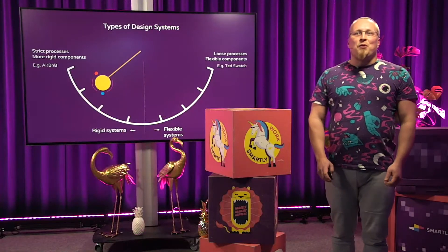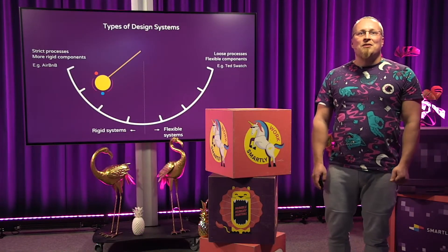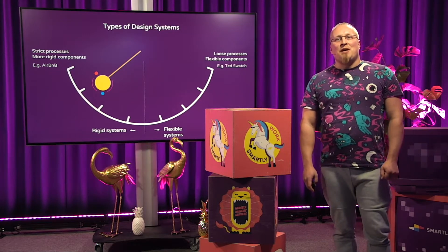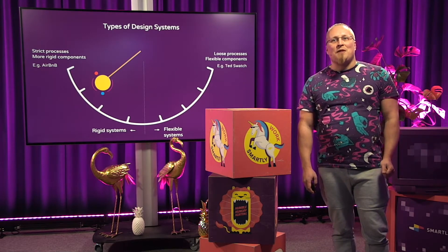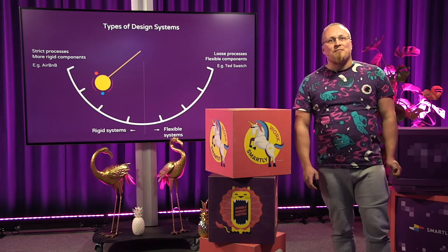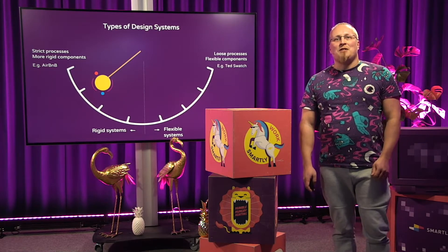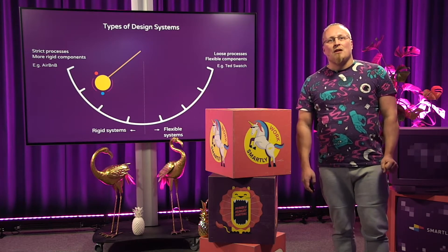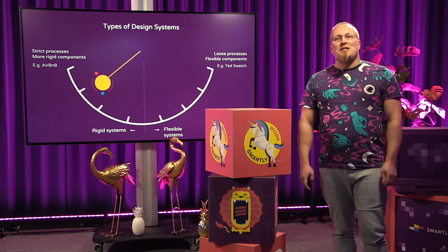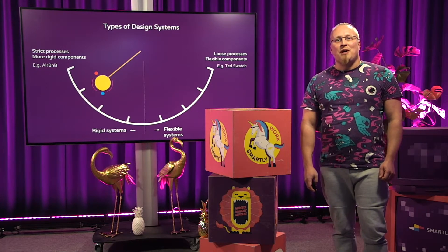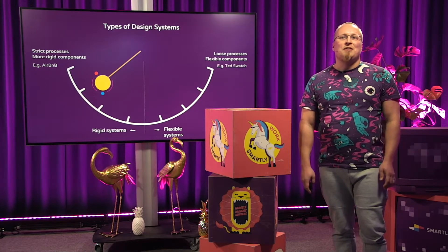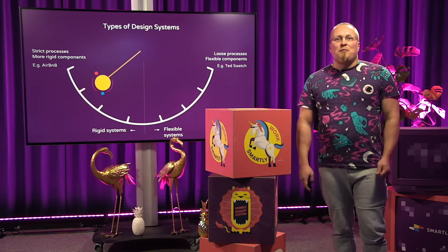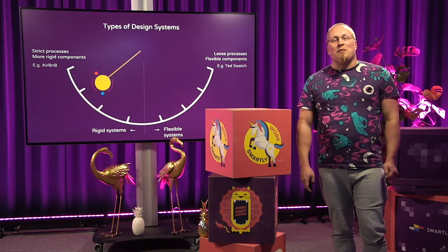A rigid system is harder to break and the UIs are usually more consistent. However, some edge cases might not be possible to implement because of a lack of flexibility. On the other hand, having too flexible a system can cause chaos and loss of control. Typically, the more processes and more strict components you have in the system, the more rigid it will be considered. And this usually applies to proprietary systems within companies.